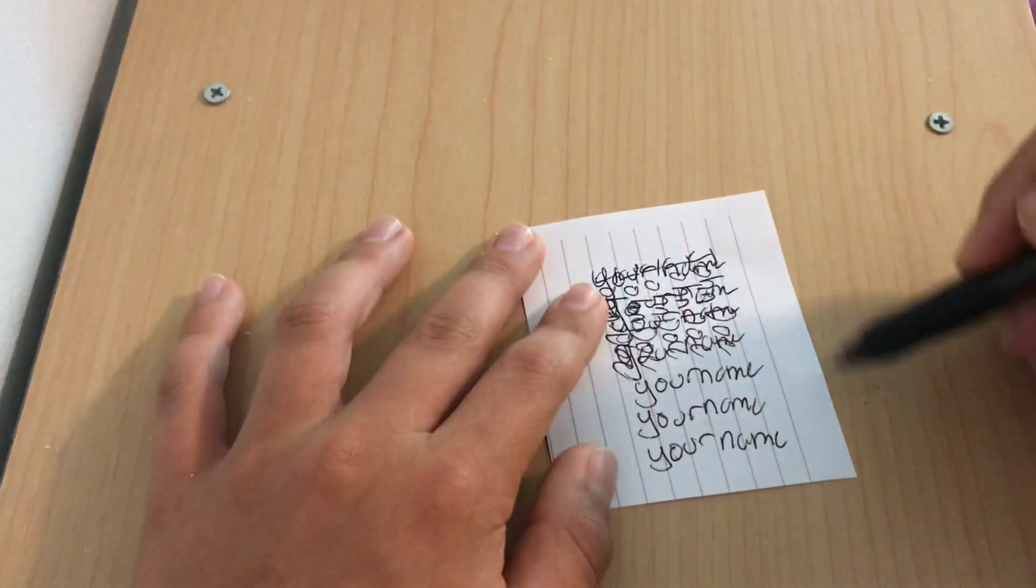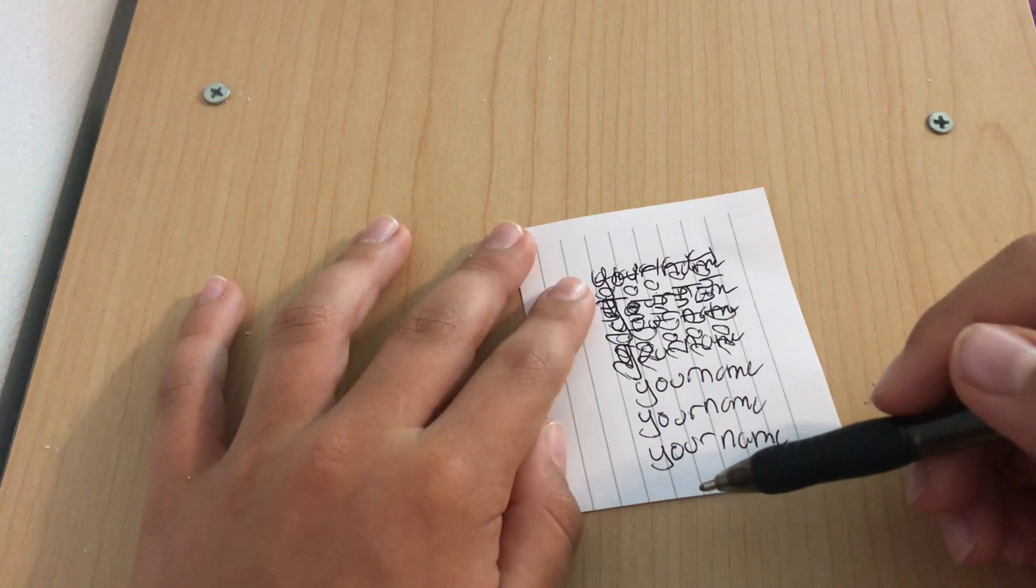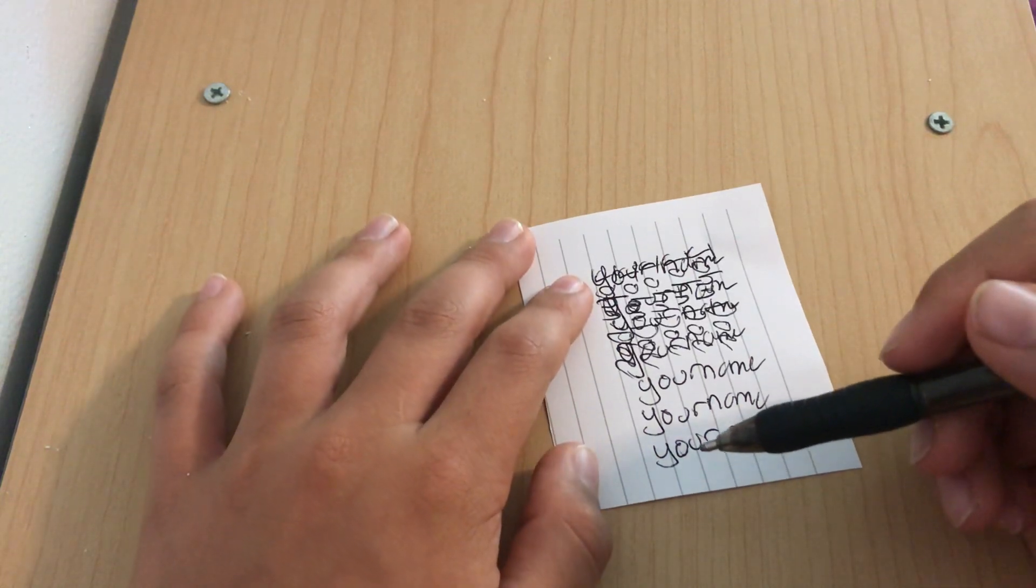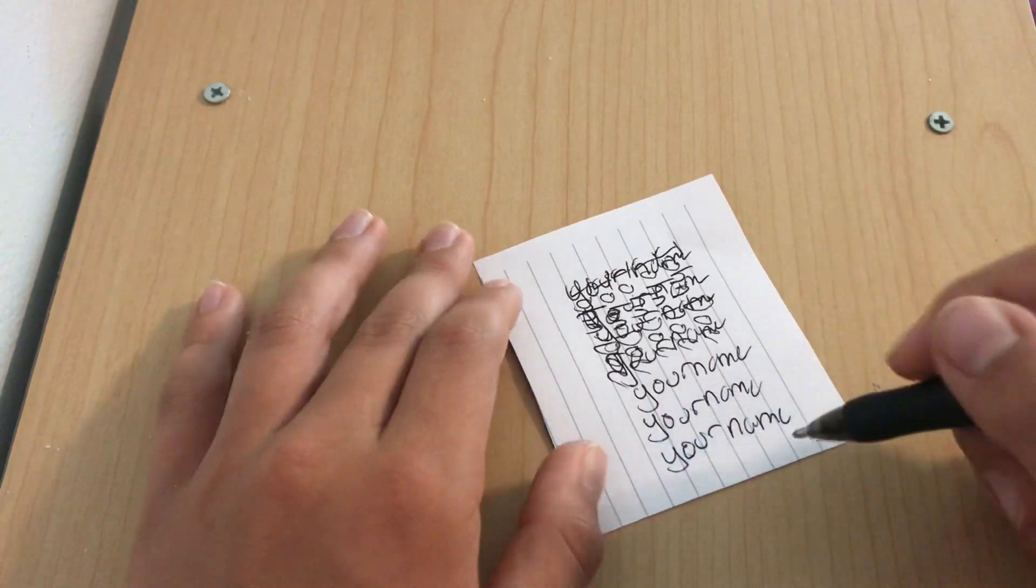Now, around this, around here, you're going to write what you want to happen. So let's say I wanted someone to fall in love. I'm going to write...